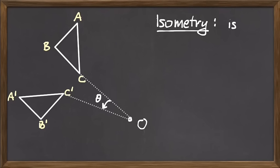We want that an isometry preserves distances. What does that mean? In the case of this diagram, what does preserving distances translate to? A and B are the same distance from A and B.